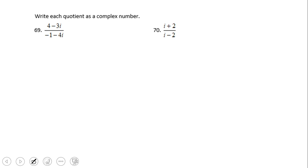If you notice here, we have in fact two complex numbers, 4 minus 3i and negative 1 minus 4i.